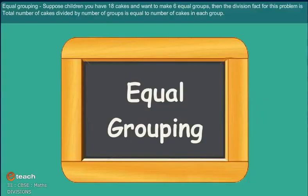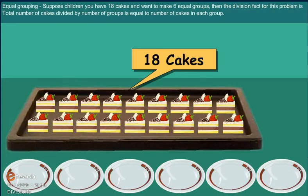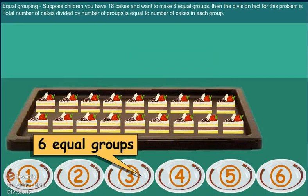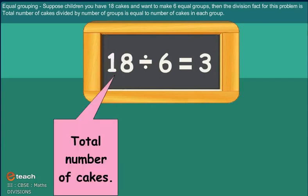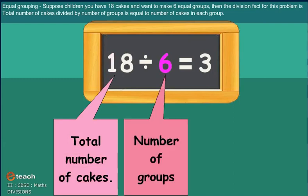Equal grouping. Suppose you have 18 cakes and want to make 6 equal groups. The division fact of this problem is: total number of cakes divided by number of groups equals number of cakes in each group.